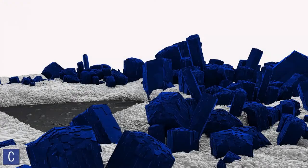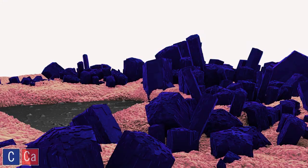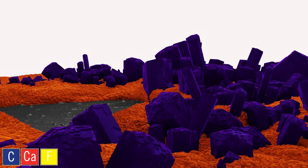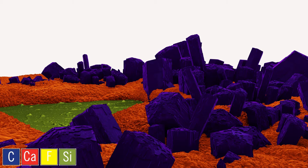But what if we could see where the carbon is present? Where the calcium is located? Where the fluorine resides? And finally, the distribution of the silica in the foulant.